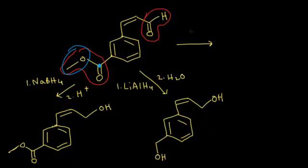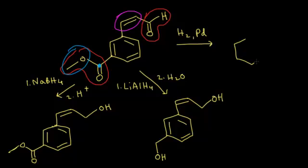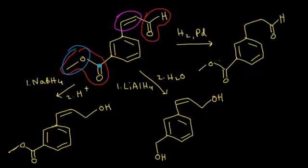What about if we add hydrogen gas and palladium as a metal catalyst? This is also a reduction reaction — hydrogenation — and it's chemoselective. Under normal hydrogenation conditions, the only thing it's going to touch is the double bond. It's not going to touch the aldehyde, the ester, or the benzene ring. So the product has the double bond reduced with two hydrogens added across it, while the aldehyde and ester remain untouched.